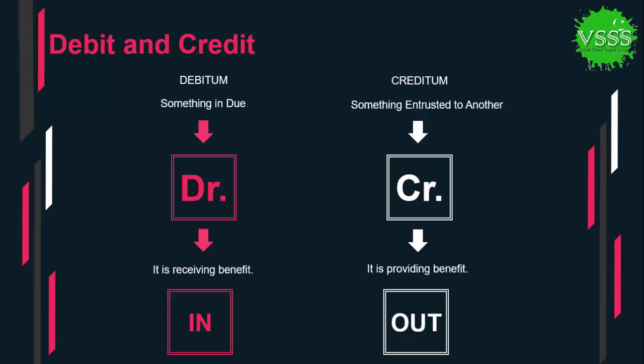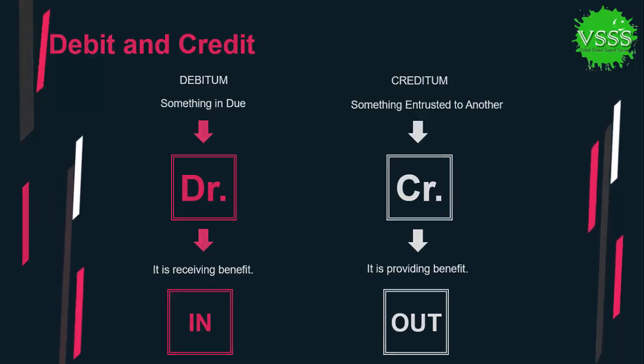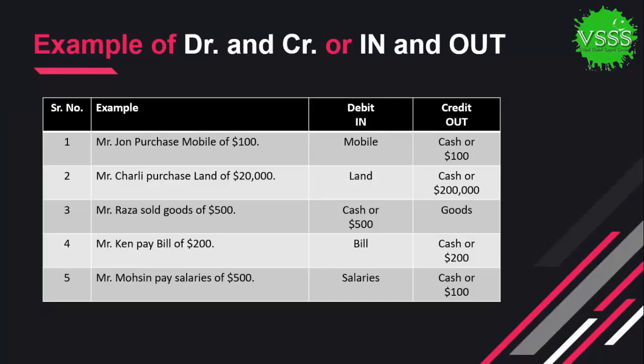We can remember these two terms using the words 'in' and 'out.' When we say 'in,' it means something is coming to us. On the other hand, 'out' means something is going from us to another. Let's take some examples of debit and credit.